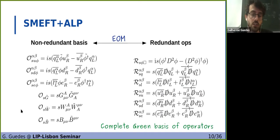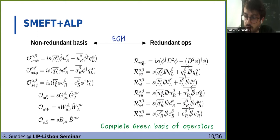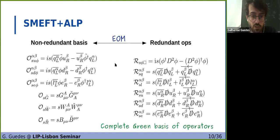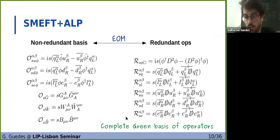This is the complete Green basis of operators that we use. On the left we have the non-redundant operators, whereas on the right the redundant ones, which are related to the previous ones by employing the equations of motion. The results we are interested in will be presented in terms of the non-redundant basis. However, we show all the intermediate calculations using the redundant ones, since if one wants to expand on this work — for example, include other particles below the electroweak scale or extend to higher dimensions — then one needs to have these results so as not to recalculate them from scratch.